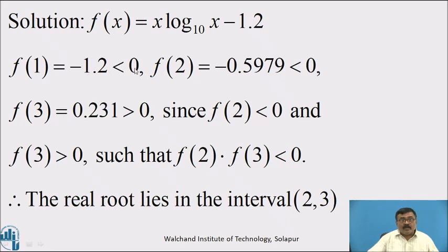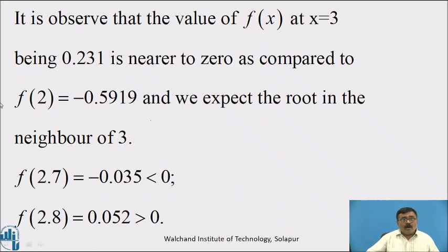f(1) = −1.2, which is less than 0; f(2) = −0.5979, which is also less than 0; and f(3) = 0.231, which is greater than 0. Since f(2) < 0 and f(3) > 0, f(2)·f(3) < 0. Therefore the root lies in the interval (2, 3). It is observed that f(3) = 0.231 is nearer to 0 compared to f(2) = −0.5919, and we expect the root in the neighborhood of 3.